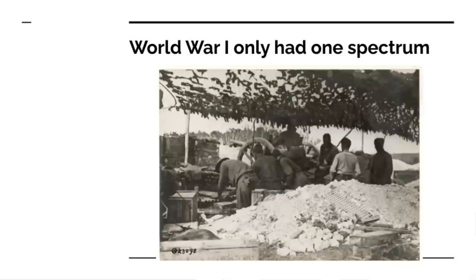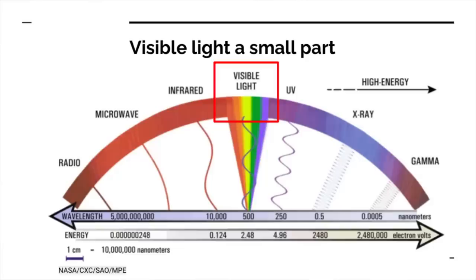As I go through the survivability onion, I want to emphasize this: think in multiple spectrums or die. World War I only had one spectrum — visible light. Camouflage netting was sufficient, and visible light was just a small part of the electromagnetic spectrum.